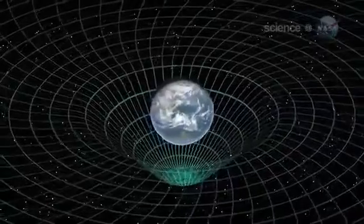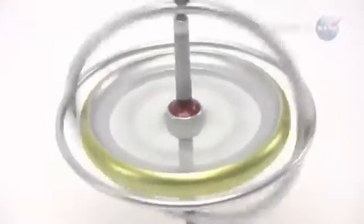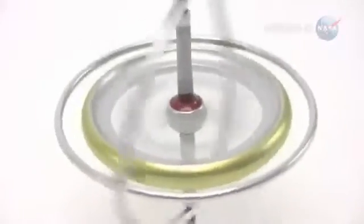This is what Gravity Probe B went into space in 2004 to check. The idea behind the experiment is simple. Imagine trying to spin a toy top on the dimpled surface of that trampoline. It's going to wobble, right?